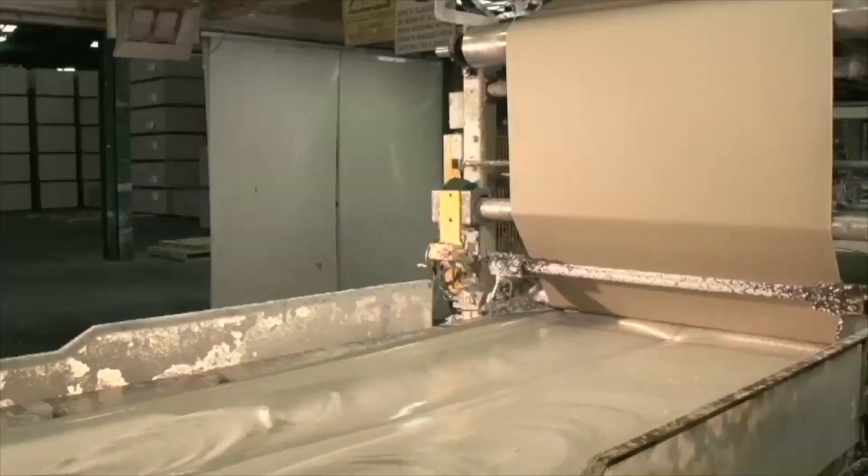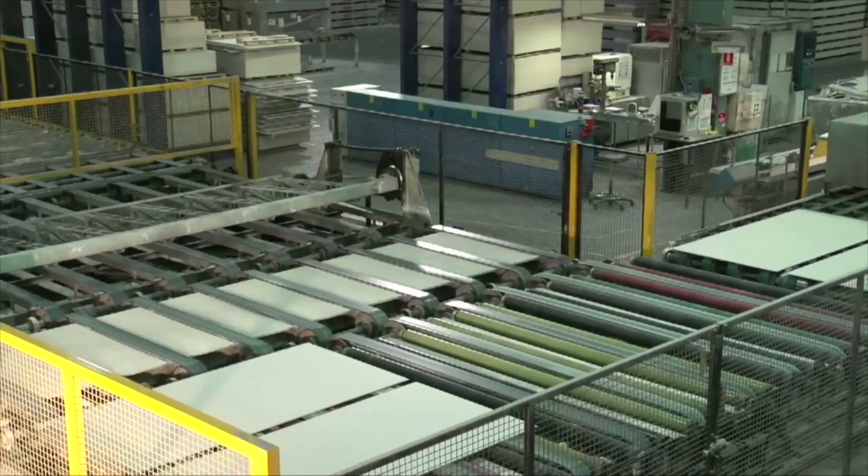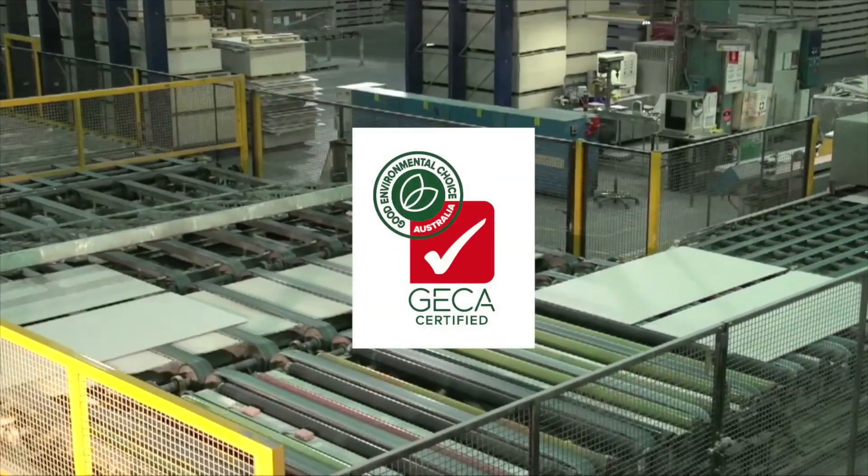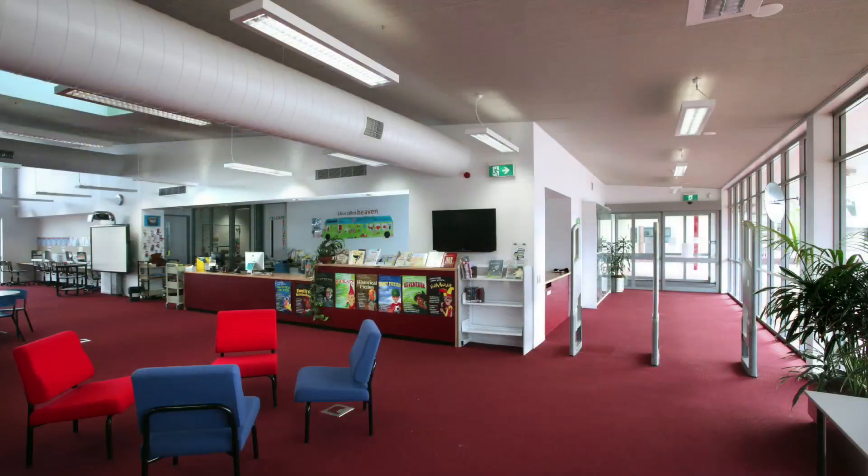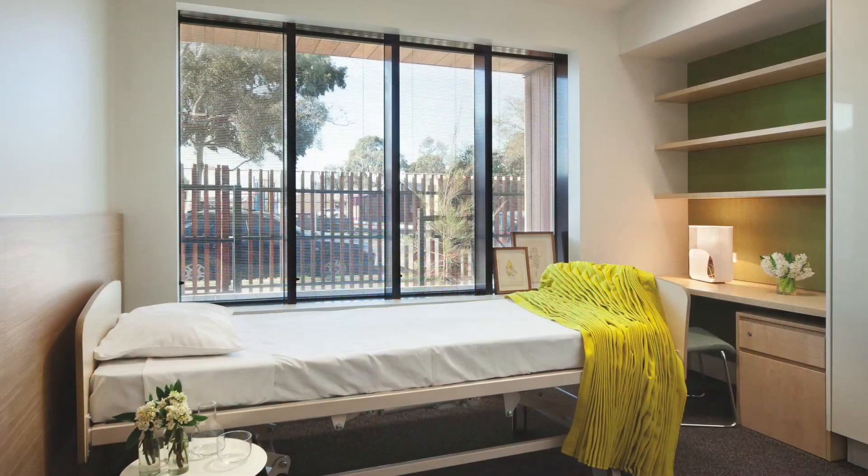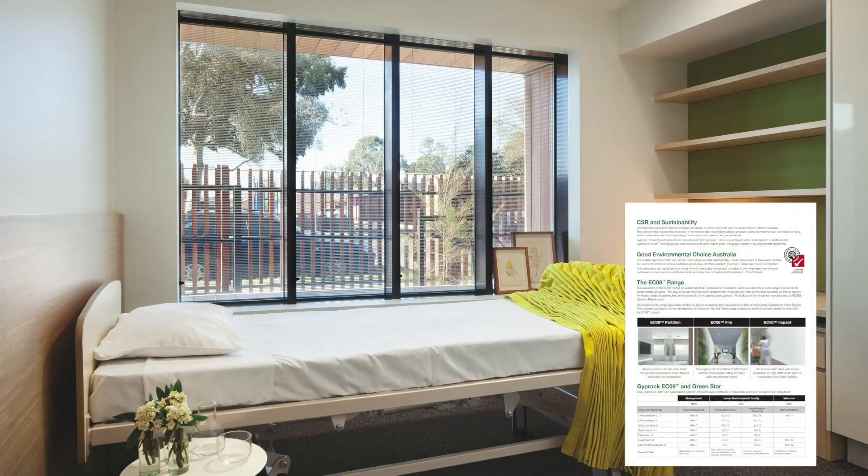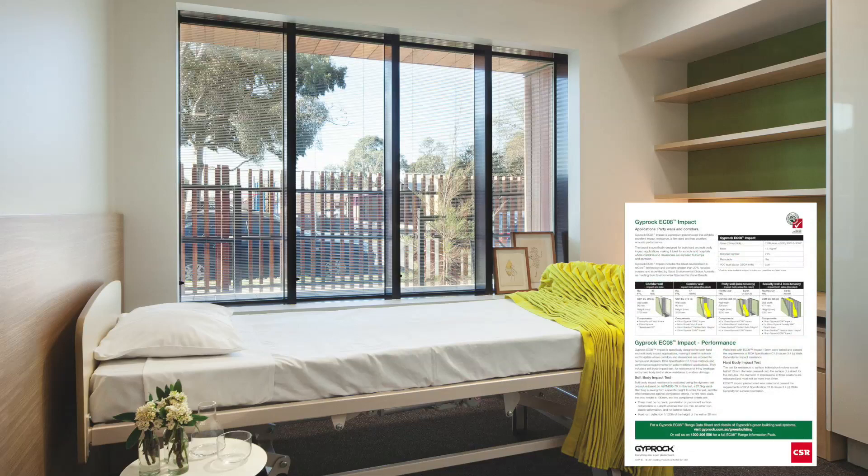This led to the introduction of EC08, a revolutionary plasterboard with high levels of recycled content and the first Australian-made plasterboard to be certified by Good Environmental Choice Australia. Since then, Chiprock has continued to expand the EC08 range with multi-function plasterboard options offering enhanced performance.